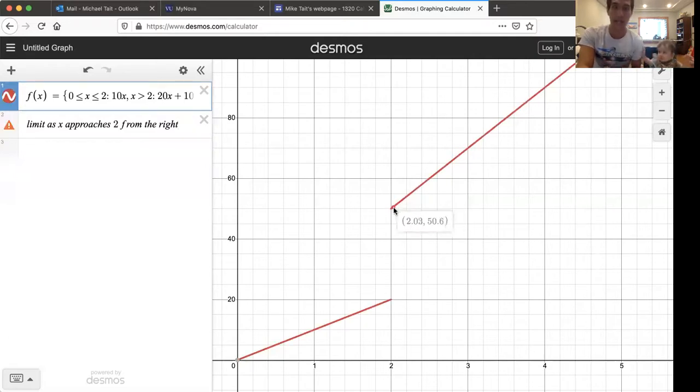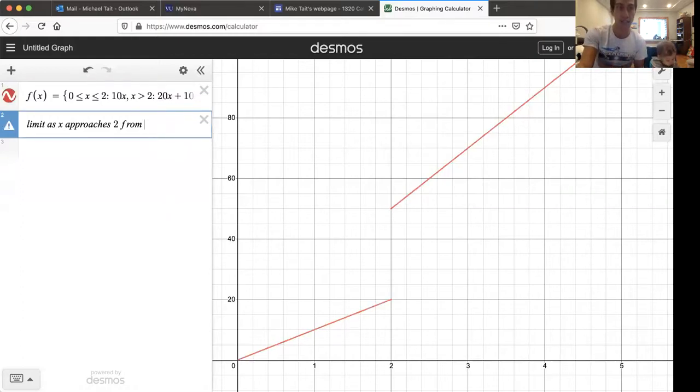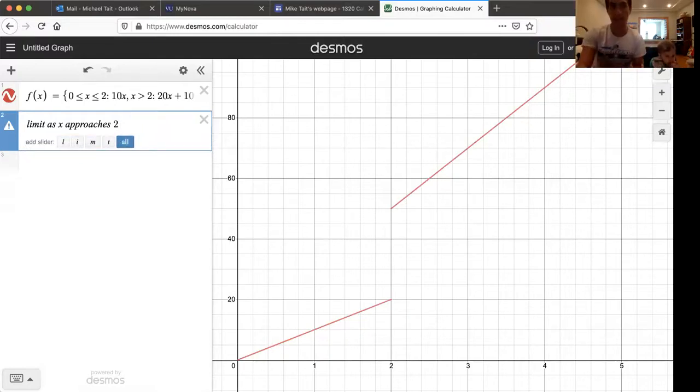And so in this case, the right-hand side limit is also going to exist. So both of these one-sided limits exist, even though the limit itself, the limit as x approaches 2 does not exist, we can still say what the left-hand side limit is and what the right-hand side limit is.